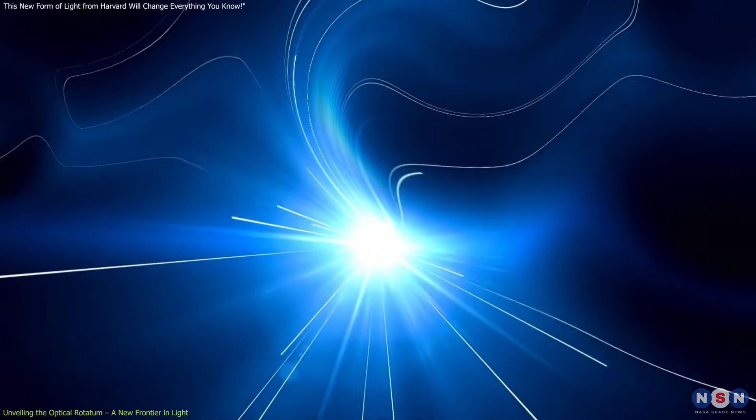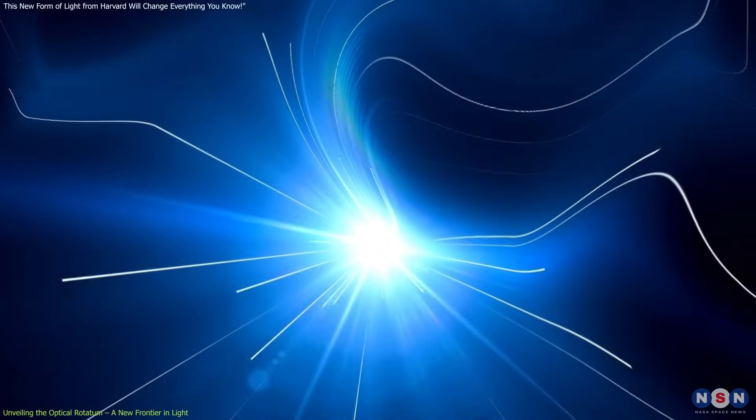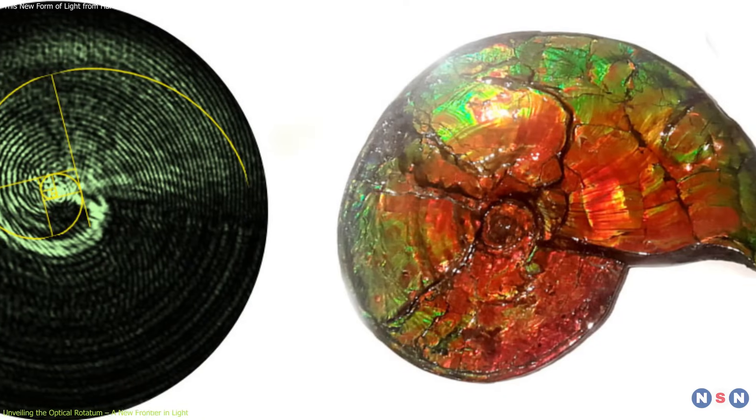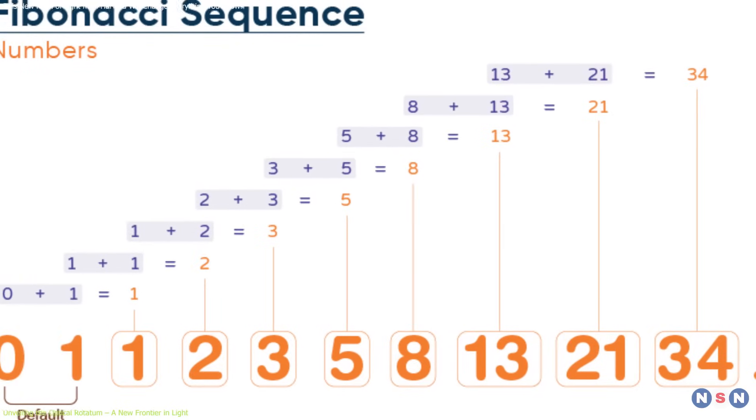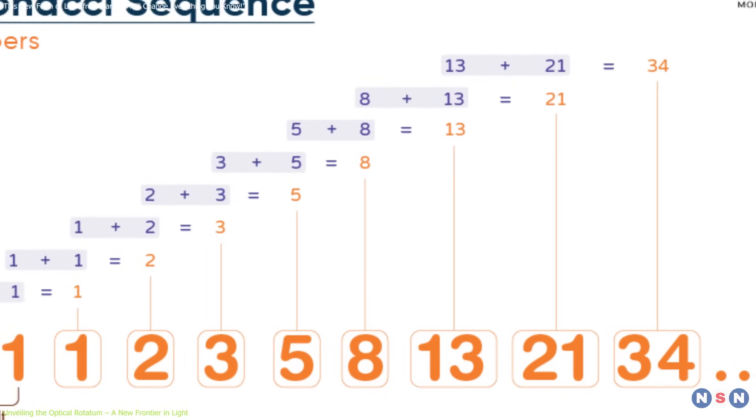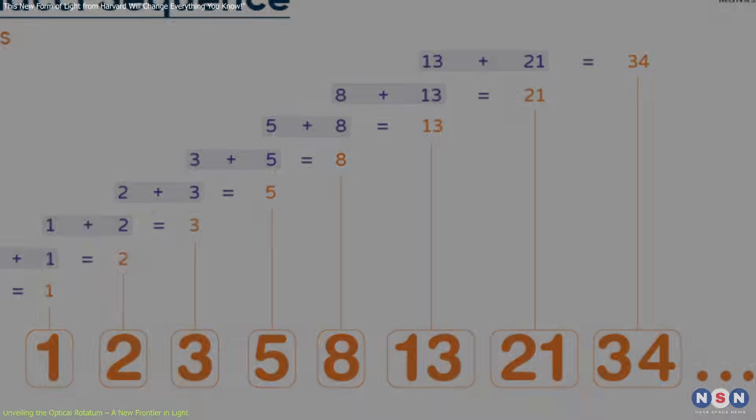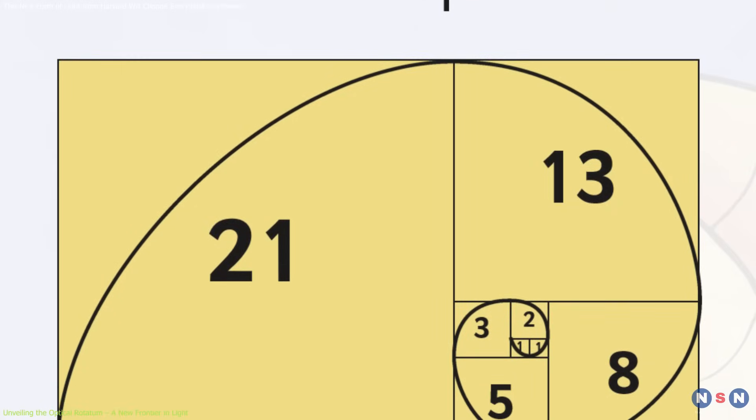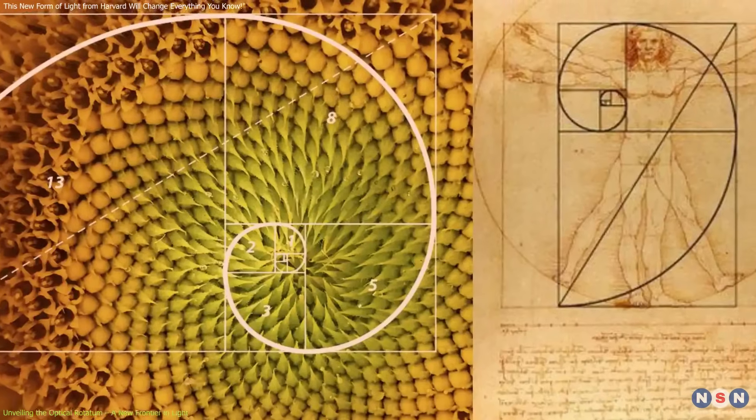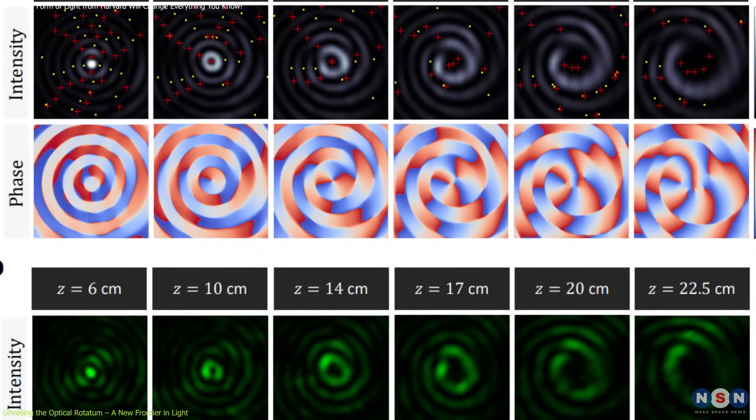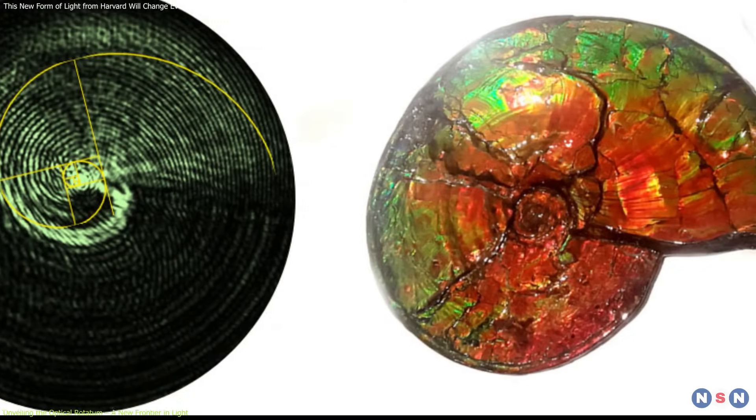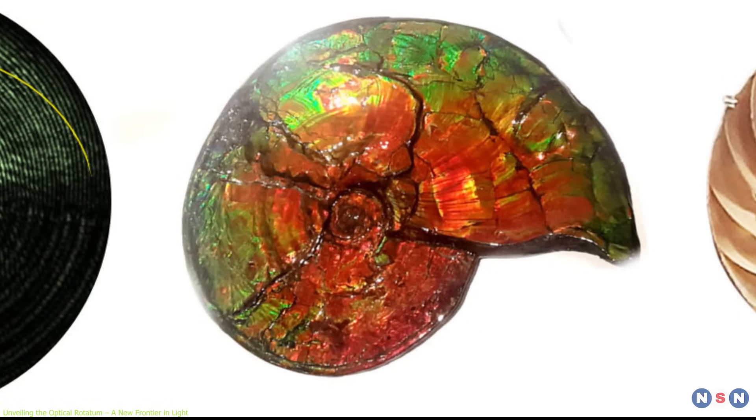What makes the optical rotatum particularly fascinating is its propagation pattern, which mirrors the logarithmic spirals found in nature. These spirals are governed by the Fibonacci sequence, a series of numbers where each number is the sum of the two preceding ones. This sequence is closely associated with the golden ratio, a mathematical relationship that appears in various natural phenomena.